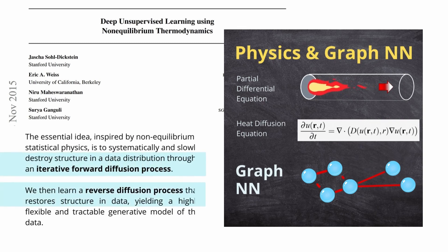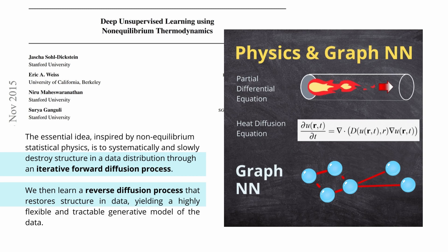What was the main part of this research paper? The essential idea, inspired by non-equilibrium statistical physics, was to systematically and slowly destroy structure in a data distribution through an iterative process they called forward diffusion. Then, the task was to learn a reverse diffusion process that restores the structure in the data, yielding a highly flexible and tractable generative model. So first you destroy, then you reconstruct — this is typical for our autoencoder application.